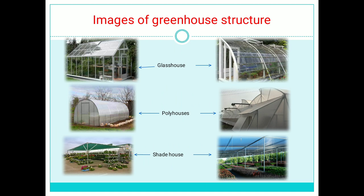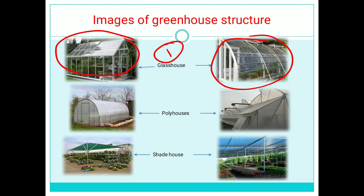To summarize: in a glass house structure, glass is used as the covering material over the whole area. In a polyhouse, polythene sheet is used as the covering material. And in a shade house, a shade net is used — it is the third type of greenhouse structure.